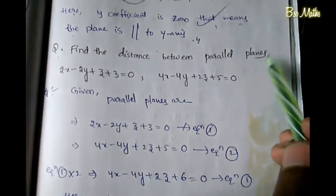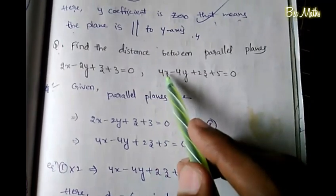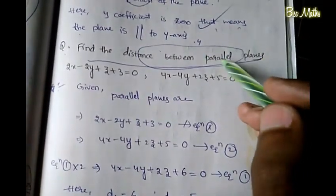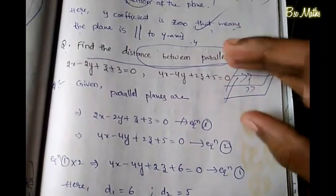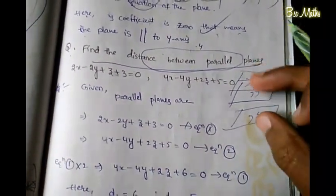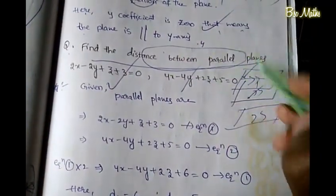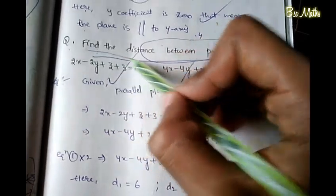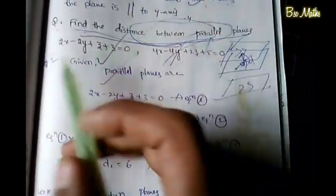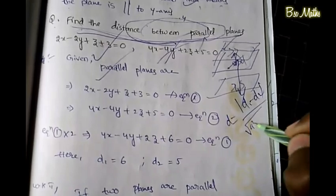Next problem: find the distance between parallel planes 2x - 2y + z + 3 = 0 and 4x - 4y + 2z + 5 = 0. Here we have two parallel planes and need to find the distance between them. We have a formula for the distance between two parallel planes.